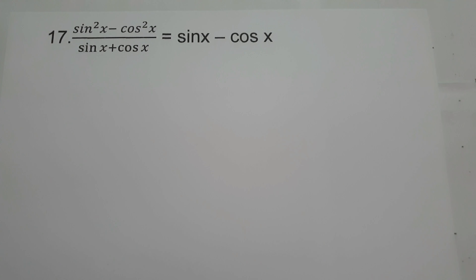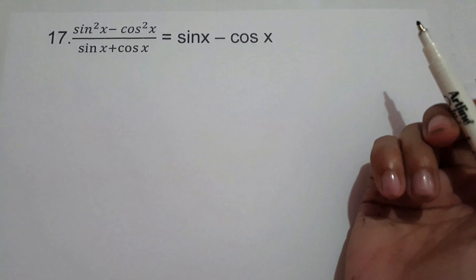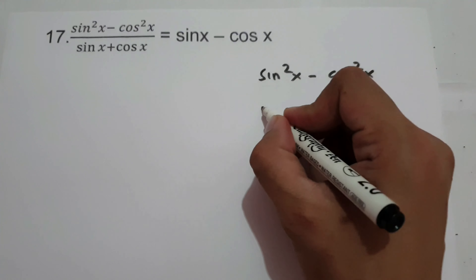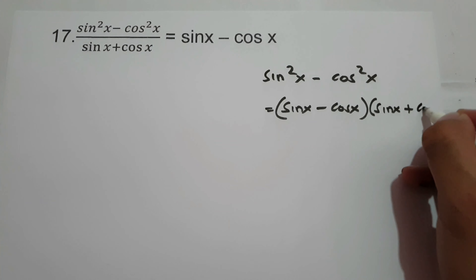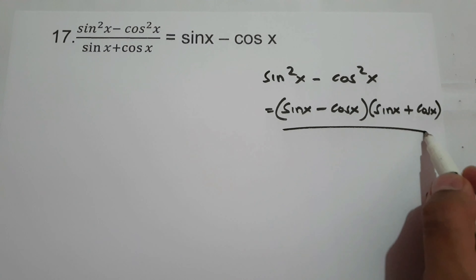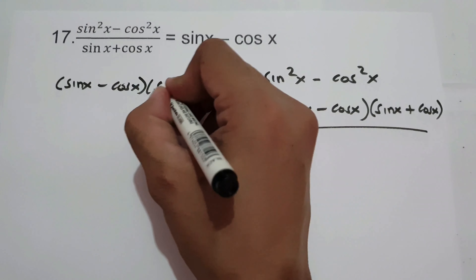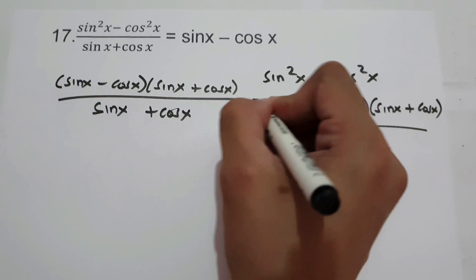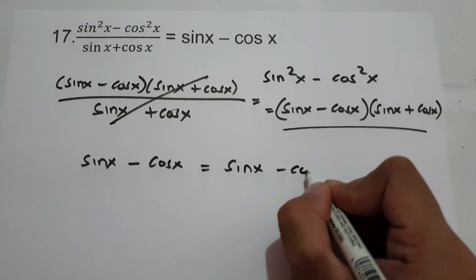On number 17, let us prove sine squared x minus cosine squared x over sine x plus cosine x equals sine x minus cosine x. Since we have sine squared x minus cosine squared x, let us rewrite this one as sine x minus cosine x multiplied by sine x plus cosine x. If you multiply the two binomials, you get sine squared x minus cosine squared x. So let us substitute: sine x minus cosine x times the quantity of sine x plus cosine x all over sine x plus cosine x. Let us cancel, and therefore we have sine x minus cosine x is equal to sine x minus cosine x.